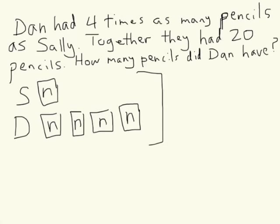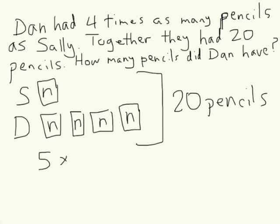They both have a total of 20 pencils. If you look at how many groups I have — Sally has one and Dan has four — that makes a total of five groups, which equals 20 pencils. So five groups of N equals 20 pencils.